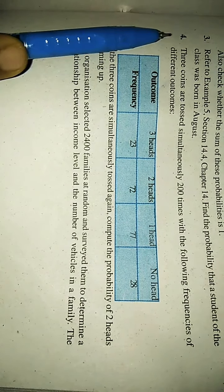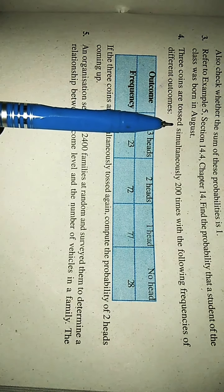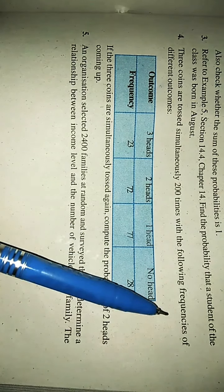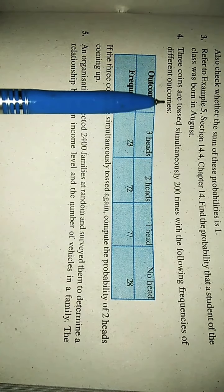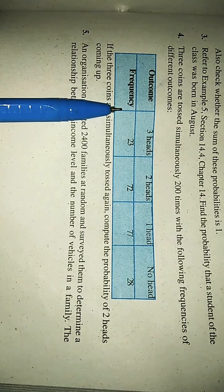Today we will do question number 4 of exercise 15.1. Three coins are tossed simultaneously 200 times with the following frequencies of different outcomes. In the table, outcome and frequencies are given.